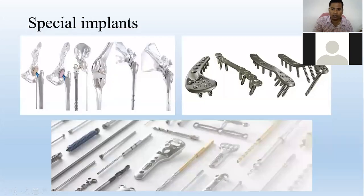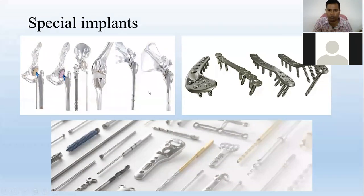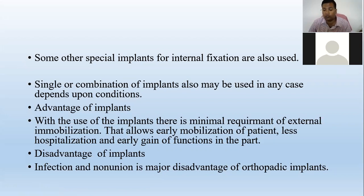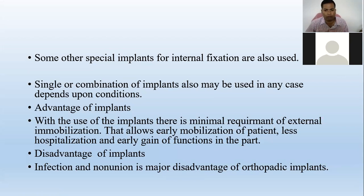Some other surgical implants include joints — you can see hip joints and knee joints — which are especially made from titanium. A single implant or a combination of two or more implants — such as screws, plates, and nails — may be used in the same person for the same fracture, depending on the condition of the wound.